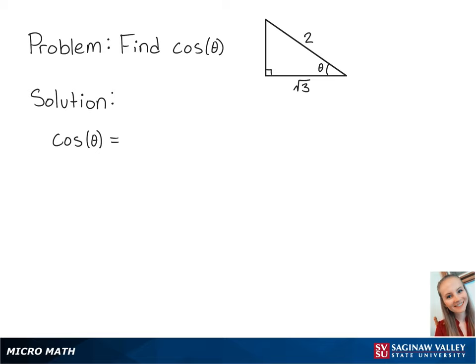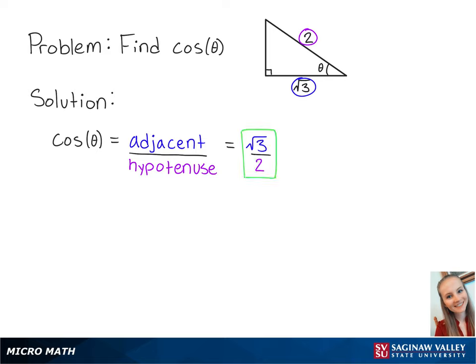For this problem, we're going to find cosine of theta of the following right triangle. Cosine of theta is equal to the adjacent side length of the angle over the hypotenuse. So cosine of theta is equal to the square root of 3 over 2. And this is the final answer.